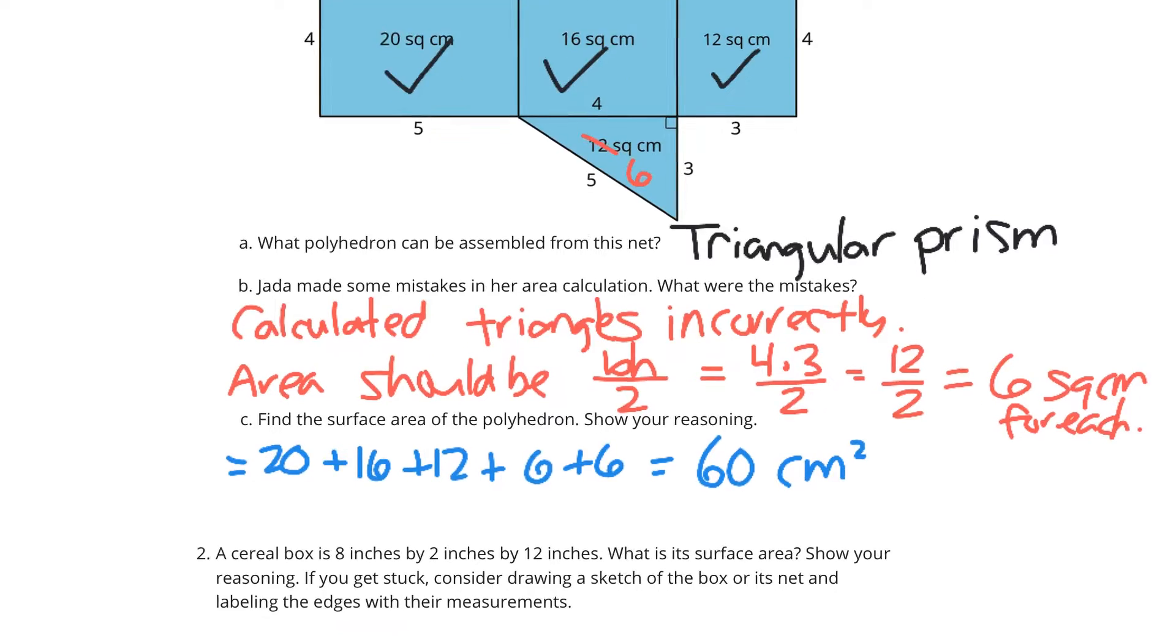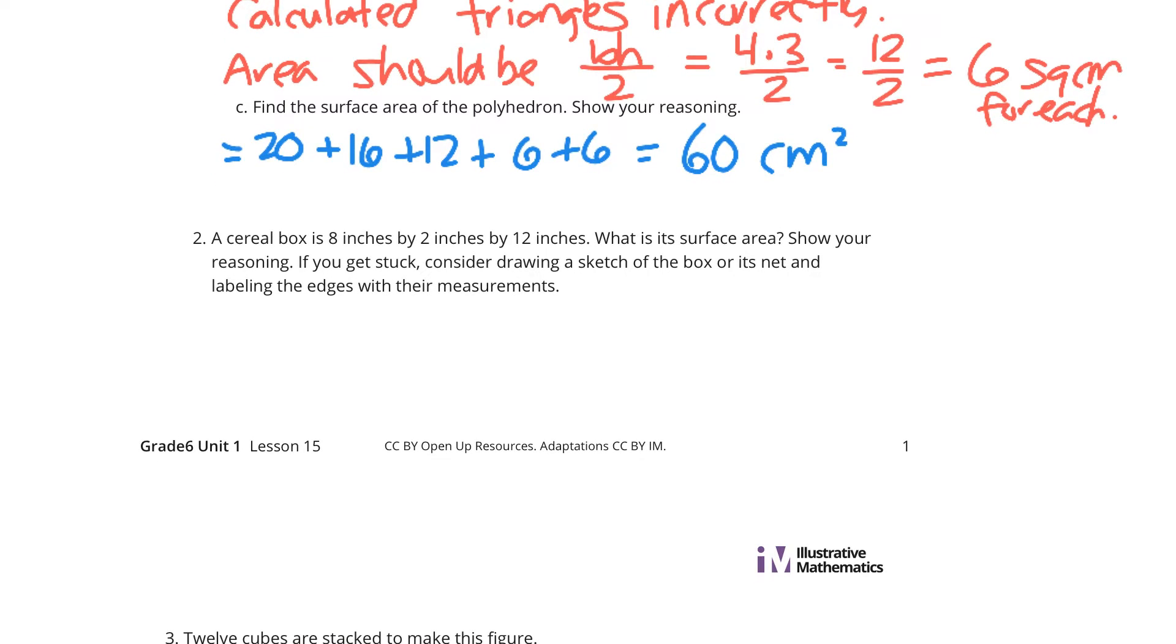Question 2. A cereal box is 8 inches by 2 inches by 12 inches. What is the surface area? Show your reasoning. If you get stuck, consider drawing a sketch of the box or its net and labeling the edges with their measurements.